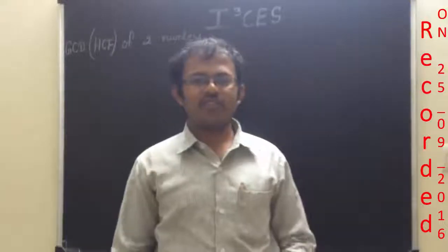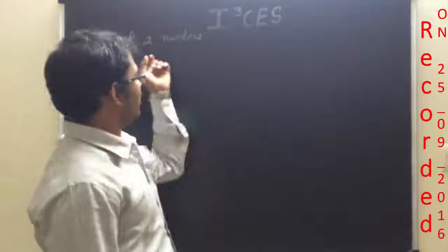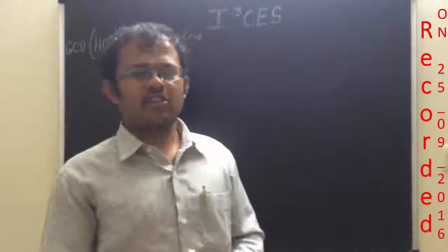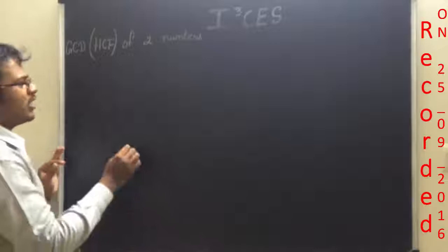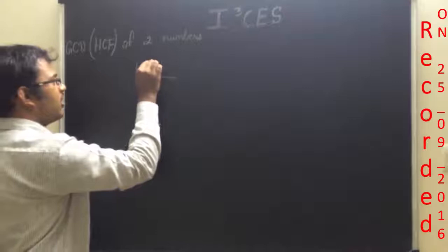My dear students, in this lecture, let us discuss how to perform GCD or HCF of two numbers. In GCD or highest common factor, what you are going to do is calculate the co-factors of two numbers where the factors should be the same. In order to explain GCD of two numbers, I will be explaining the logic. Let me consider the two numbers 6 and 2.